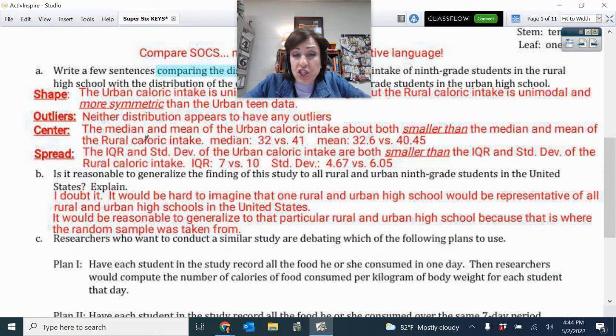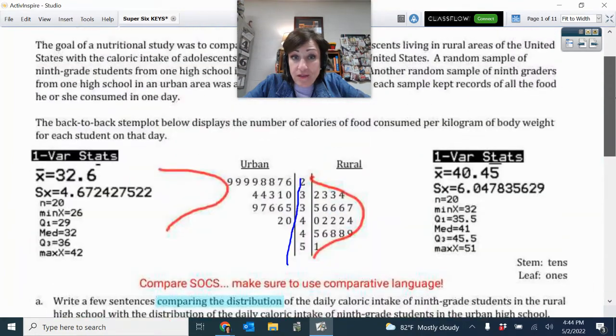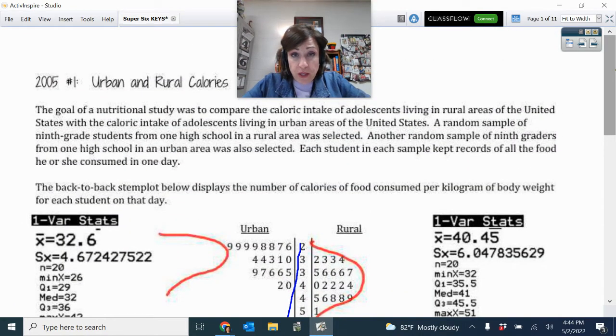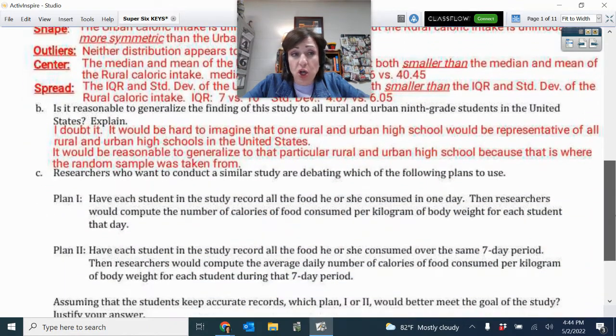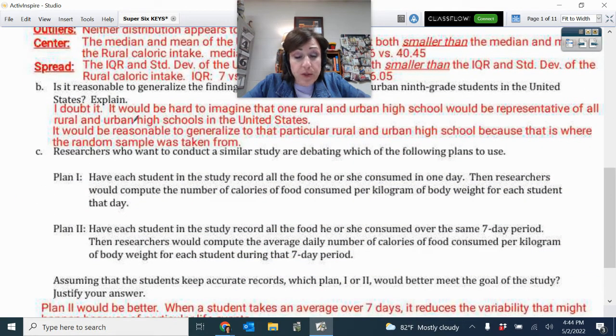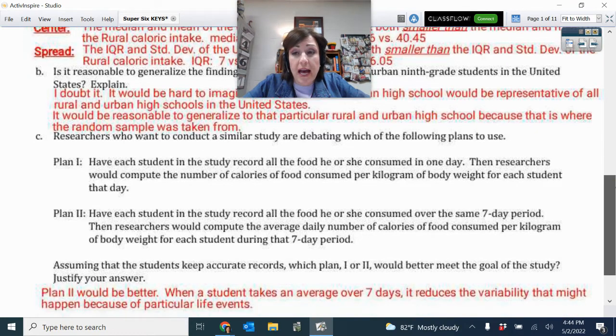And so then I described the spread, I said IQR, I went ahead and said standard deviation, but IQR might be a better indicator. You could also probably use range. So do you think you can generalize to everybody in the United States? And that is no, you cannot because you can only generalize to whom you pull the sample results from. And they pulled from one high school and that was rural and one high school that was urban. And so it certainly doesn't seem reasonable to generalize to all high schools based on one.